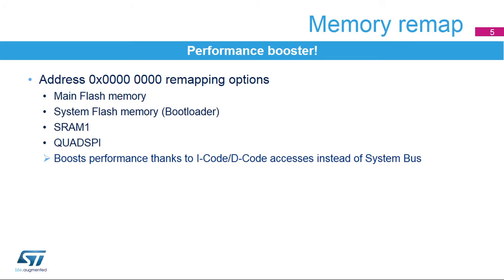The memory remap at Cortex-M4 address 0 allows the boost of performance, thanks to instruction and data bus access instead of using the system bus. The memory remap at address 0 is selected using the mem_mode bits in the system configuration remap register. They allow the selection of either the main flash memory or the system flash memory, the SRAM1 or the quad SPI.